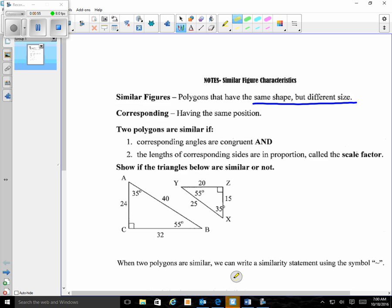Polygons are similar if the corresponding angles are congruent, meaning that your angles are the same, and the side lengths of the corresponding sides are proportional. They're proportional because of a scale factor and we're going to get into scale factor a little bit later this week.